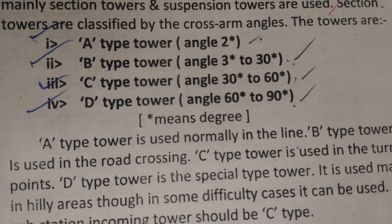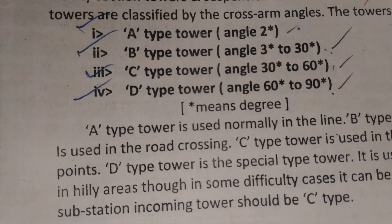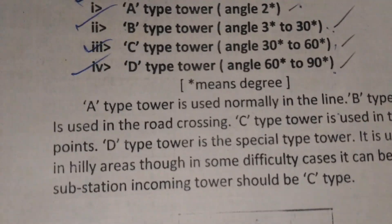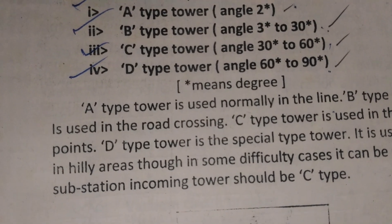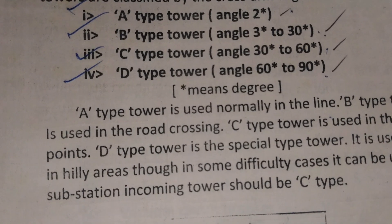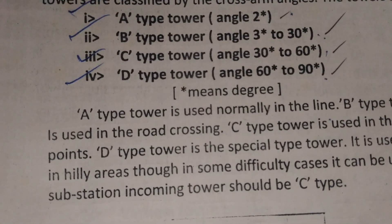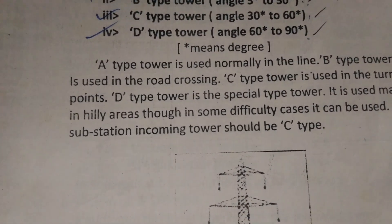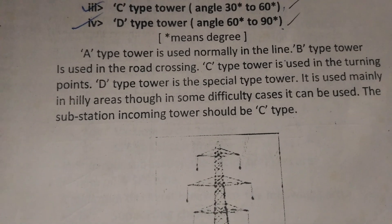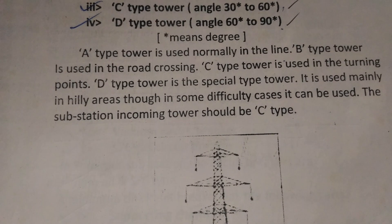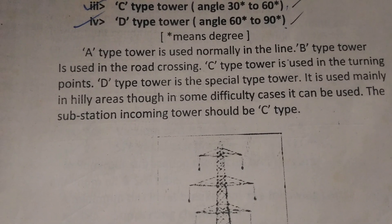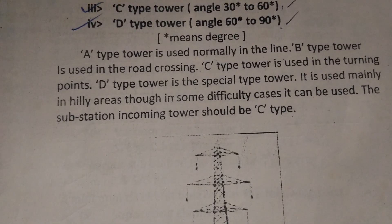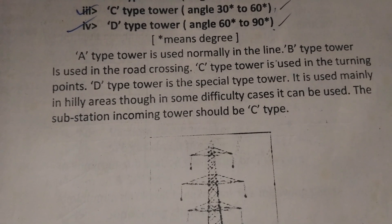Section towers are classified by the cross arm angle. A-type tower has an angle of 2 degrees. B-type tower has an angle of 3 to 30 degrees. C-type tower is 30 to 60 degrees. D-type tower is 60 to 90 degrees. A-type tower is used normally in the line. B-type is used in road crossings. C-type is used at turning points. D-type is a special tower mainly used in hilly areas, and in some difficult cases it is used for substation incoming towers, which should be C-type.